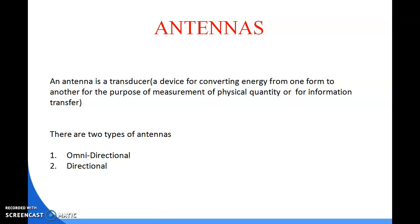Antennas are designed to transmit or receive radio waves. They are used in systems such as radio and television broadcasting, point-to-point radio communication, wireless LAN, radar, and space exploration. Antennas usually work in air or outer space and have practical use for transmission and reception of radio frequency signals.